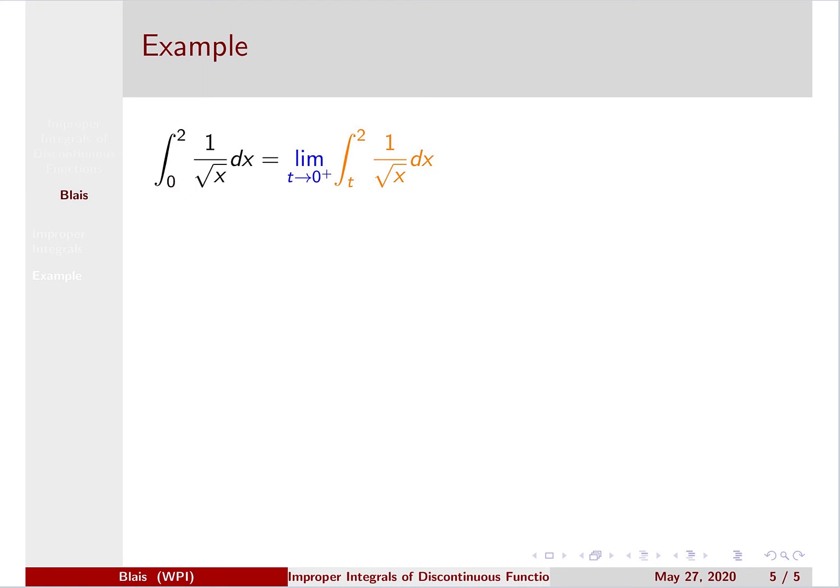Integral from 0 to 2 of 1 over the square root of x. And so we know 1 over square root of x looks something like this. And so the area we are looking at is this area here, from 0 to 2. And the question becomes, as x approaches 0 from the right, is this function approaching the y-axis quickly enough for this area to be finite?